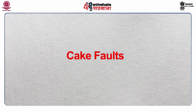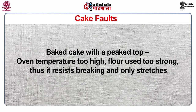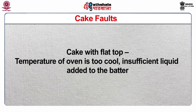Now I am going to discuss cake faults. The first problem normally found in cakes is shape fault. Collapsed cakes with white surface spots: too much tenderizer used, which prevents the cake from setting in the center. Too much sugar causes white spots. Baked cake with a peaked top: oven temperature too high, flour too strong — it resists breaking and only stretches. Cake with flat top: temperature of oven is too cool, insufficient liquid added to the batter.